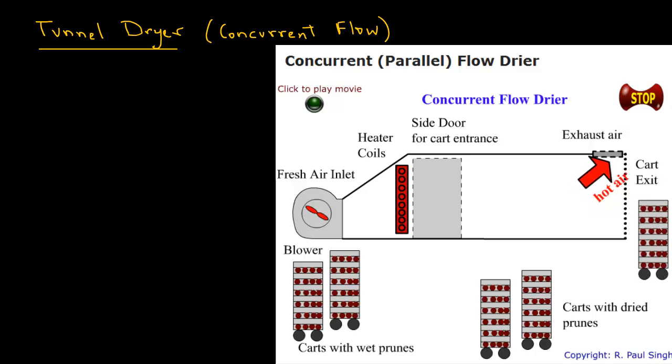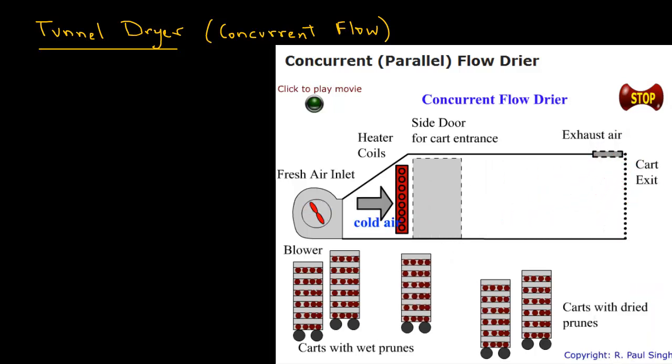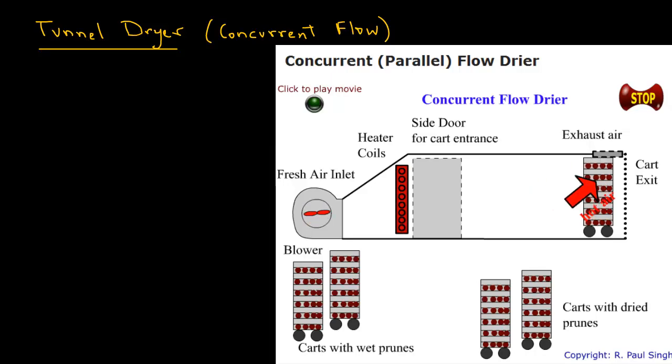The heated air is exhausted and the carts containing dried food exit from the tunnel dryer in a sequential manner. It may take up to 36 to 48 hours for foods such as prunes to dry in this type of a drying system.